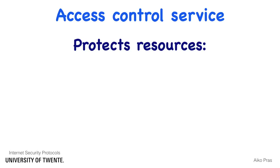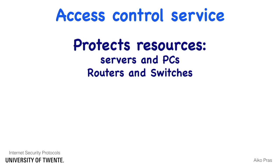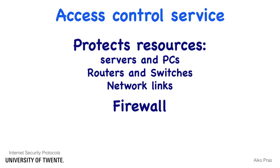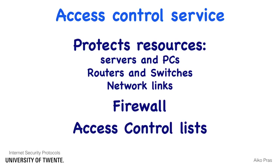Such resources may be end systems, such as servers and PCs, but also network systems, such as routers and switches, as well as network links. Access Control at the network level is often achieved using firewalls. Access Control within systems can be achieved by using Access Control lists.